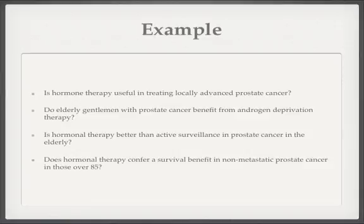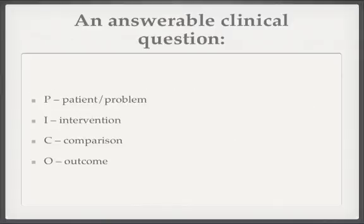So what I want to talk about now is one way that we can turn these vague clinical questions into an answerable clinical question, and that's using the PICO format. It's not the only way of formulating a clinical question, but I think it's quite good, not least because it's only four points and it's quite easy to remember. P stands for your patient or the problem you're looking at. I is the intervention that is proposed. C is your comparison group. And O is what outcome we are measuring.